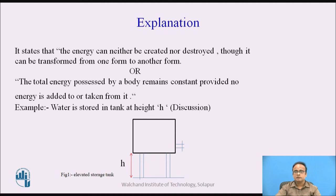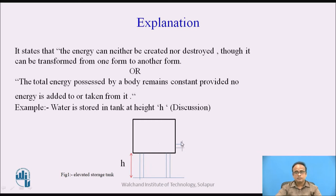For example, consider water stored in a tank — say it is an RCC tank at height H. When you open the water tap, the water starts flowing down by gravity. The water stored in the tank before opening the tap has potential energy. When you open the tap and the water starts flowing, the energy is converted from potential energy to kinetic energy. This is a best example of the law of conservation of energy.